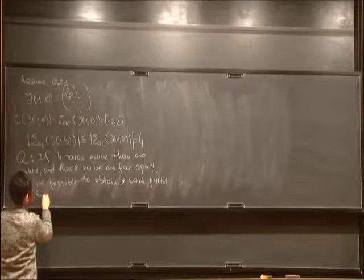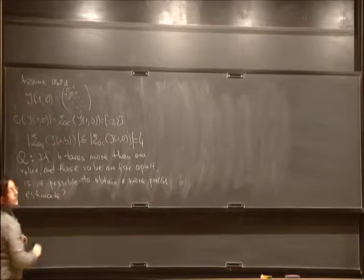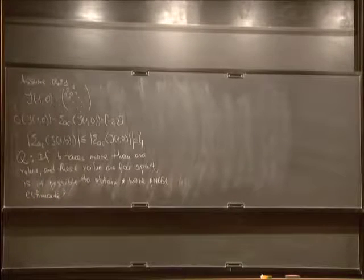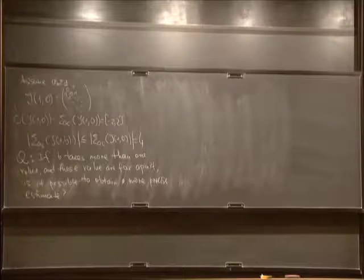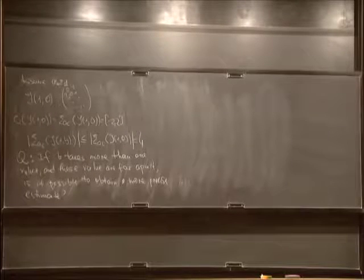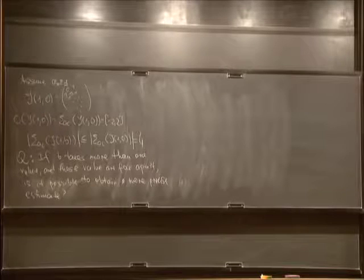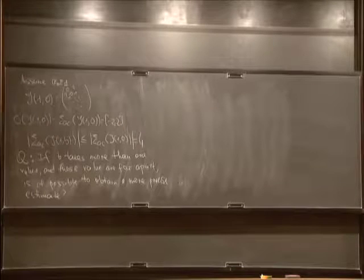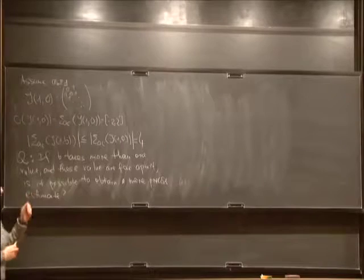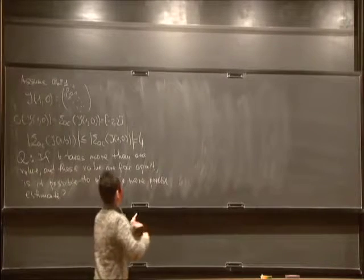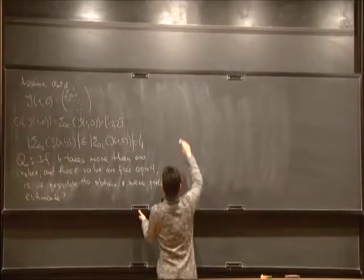An audience member asks: if B is made periodic, non-trivially, do we know the spectrum is actually less than 4? The answer is yes, and the speaker says he will address this question in about five minutes.